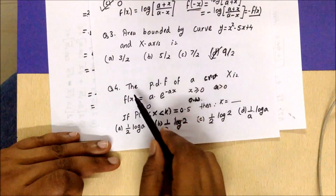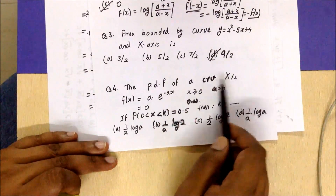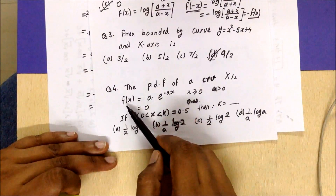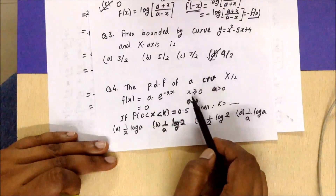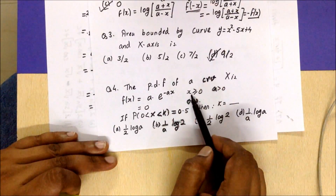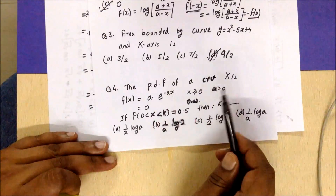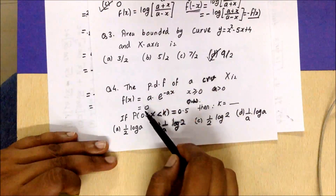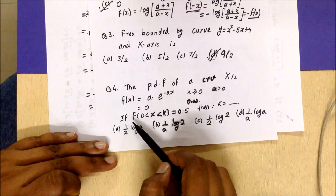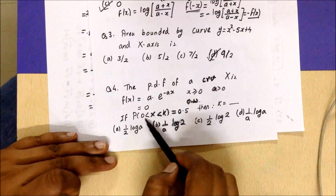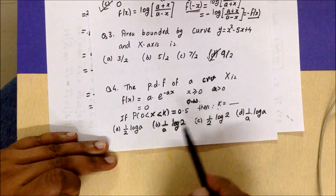Moving on to the next question: we have the PDF of a continuous random variable x defined as f(x) = a·e^(−ax) for all positive values of x, where a is a positive value, and 0 otherwise. They have given that the probability of x being between 0 and k is 0.5. What should be the value of k?